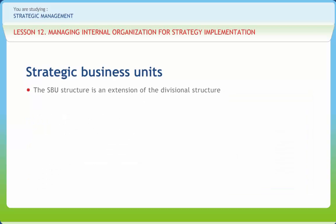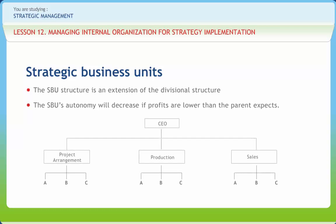The SBU structure is an extension of the divisional structure. In its most extreme form, the SBU operates as a separate autonomous organization and may periodically send profits to the corporate parent. Each unit will have a clearly defined strategy based on its capabilities and overall organizational needs. The SBU's autonomy will decrease if profits are lower than the parent expects. The parent may impose controls at various levels to ward off risks. It improves coordination between divisions with similar strategic concerns and tightens strategic management and control of large, diverse business enterprises, but it places another layer of management between divisions and corporate management.